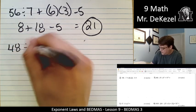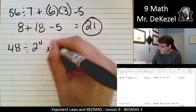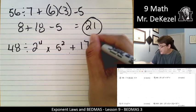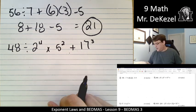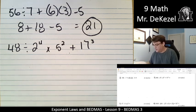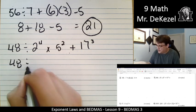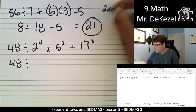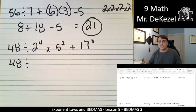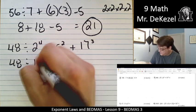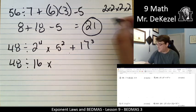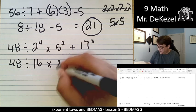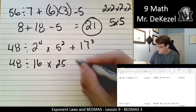48 divided by 2 to the power of 4 times 5 to the power of 2 plus 17 to the power of 3. We've got some work to do with the 17 to the power of 3. Let's just start doing these exponents so that we can work them out. So 48 stays, 2 to the power of 4, that's 2 times 2 times 2 times 2. 2 times 2 is 4, then we have 8 and we have 16. So there we go. 48 divided by 16 multiplied by 5 to the power of 2, that's 5 times 5, which we know is 25.